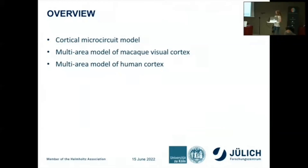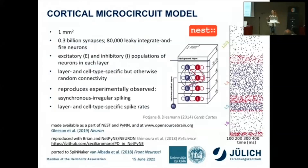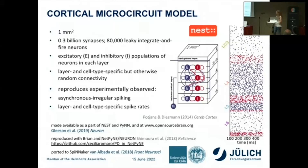Before going into the two multi-area models, I will briefly introduce their microcircuit building blocks. All the local areas are variations of the circuit by Potjans and Diesmann, which describes one square millimeter of cortical surface. This is a model of early sensory cortex consisting of about 80,000 leaky integrate-and-fire neurons connected via 300 million synapses. Each of the cortical layers 2, 3, 4, 5, and 6 contains one excitatory and one inhibitory population. The connectivity is layer and cell-type specific but otherwise random, and all neurons receive stochastic external drive representing the non-modeled parts of the brain.